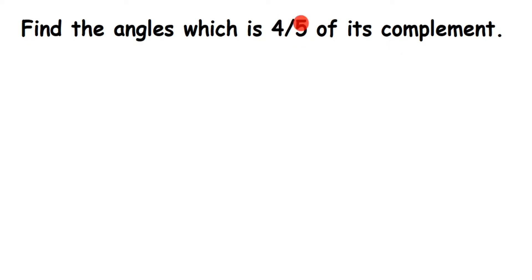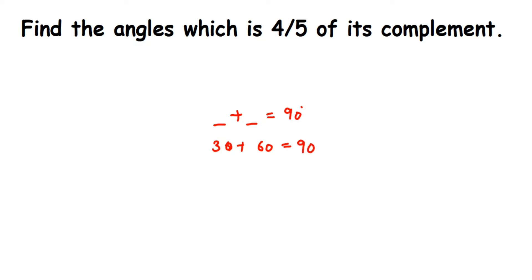But what are complementary angles? When you add two angles and the sum is 90 degrees, those two angles are called complementary angles. For example, 30 degrees and 60 degrees add up to 90 degrees, so 30 and 60 are complementary angles.